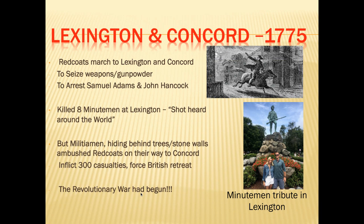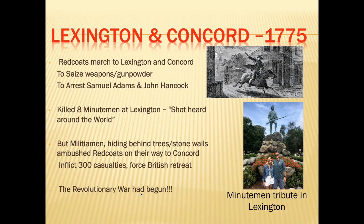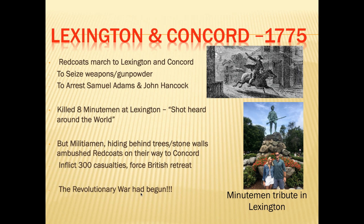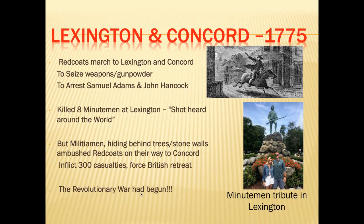At Lexington, Samuel Adams and John Hancock escaped. About 30 militiamen faced approximately 1,000 Redcoats and refused to back down — it was a massacre at Lexington, with eight Minutemen killed and no British casualties. The Redcoats continued to Concord, but as they marched, militiamen gathered from local towns, hiding in bushes and ambushing the Redcoats along the way. By the time they reached Concord, 300 casualties were inflicted upon the British regiments, causing them to retreat back to Boston. The Revolutionary War had begun.